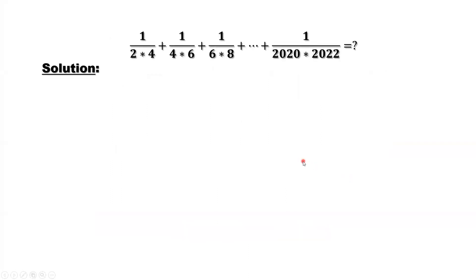Here is the basic idea we are going to use to derive the answer. The consecutive cancellation method. 1 over n times n plus 1. The denominator is a product of two consecutive numbers.